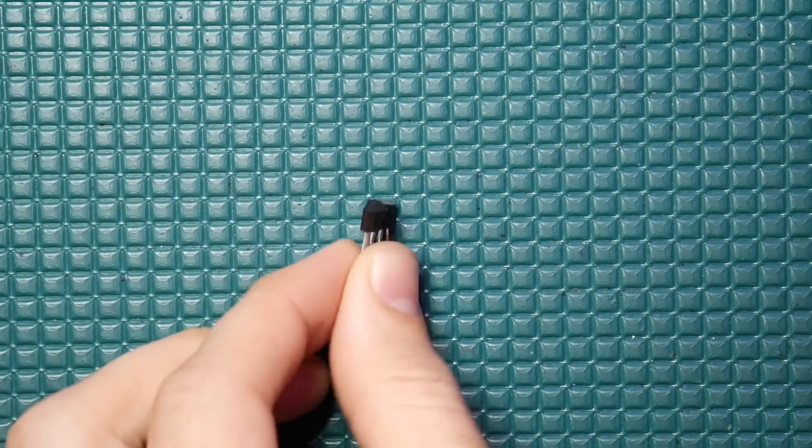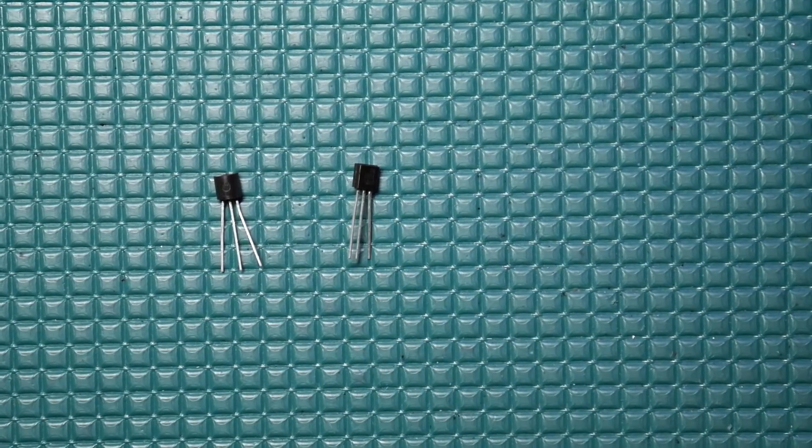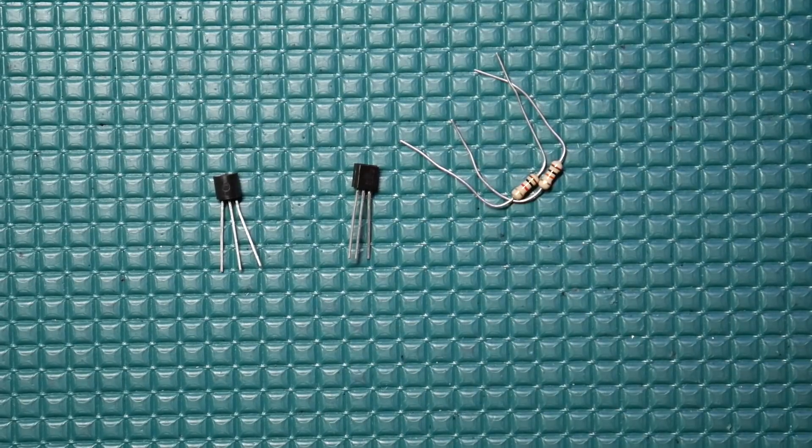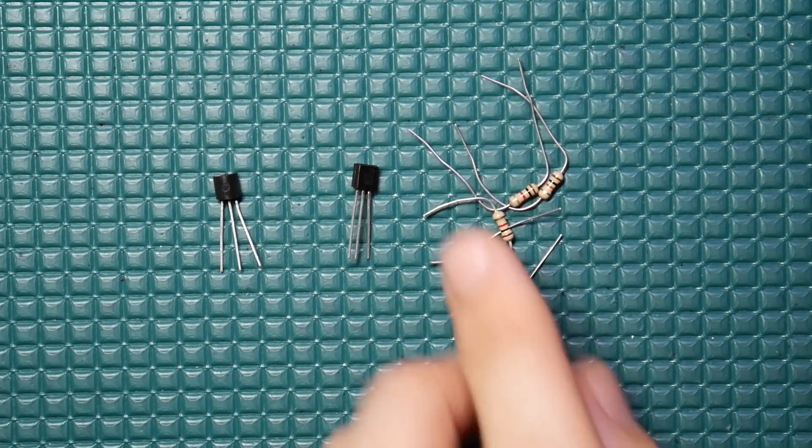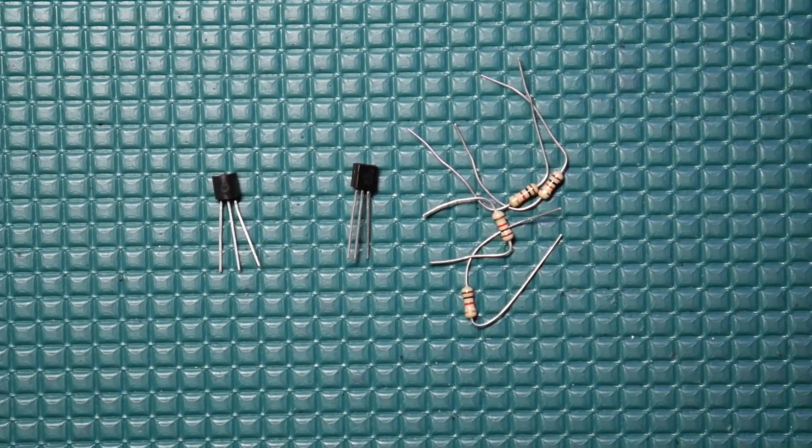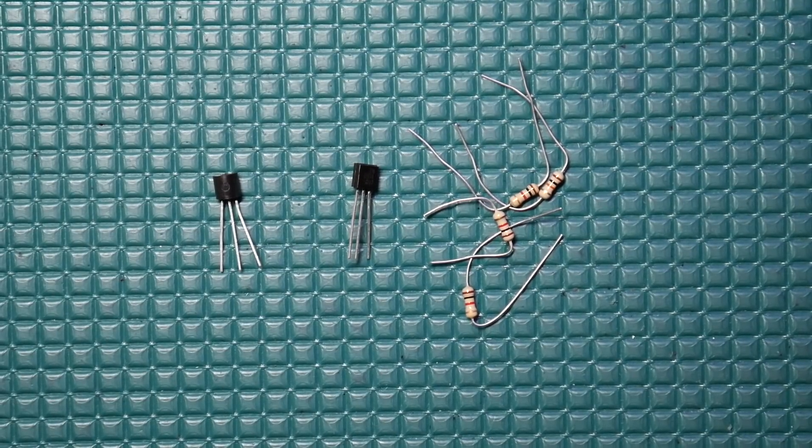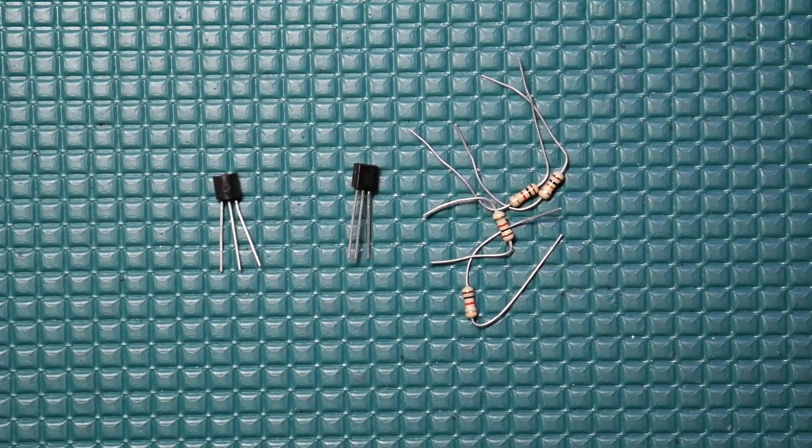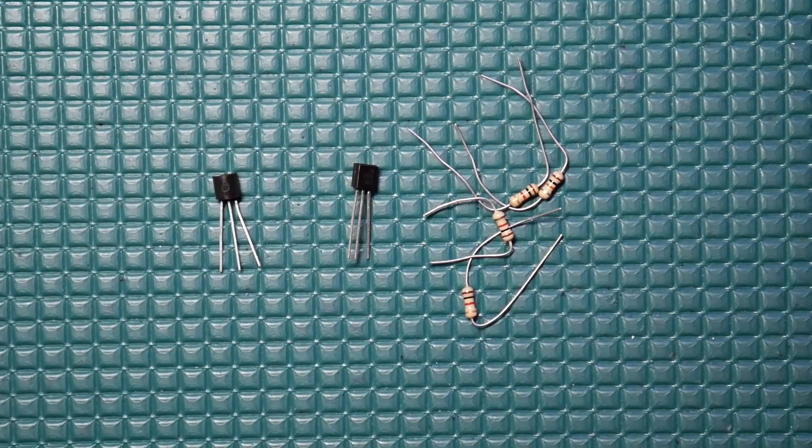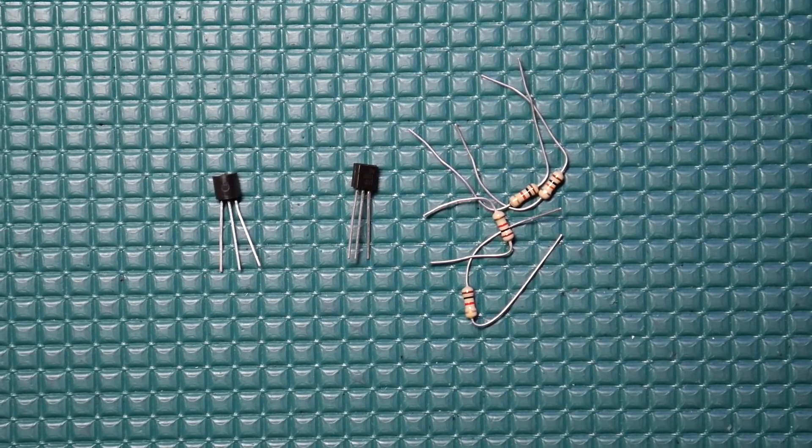if I gave you two NPN transistors and four 1k ohm resistors, could you build me a voltage regulator that could power something like an Arduino board with an input voltage from 10 to 20 volts or something like that?